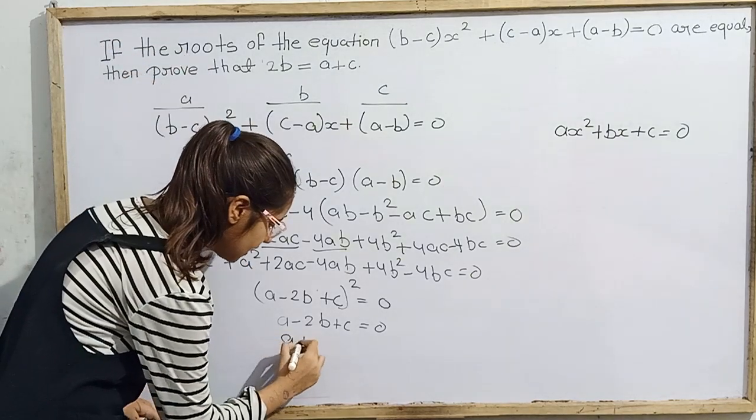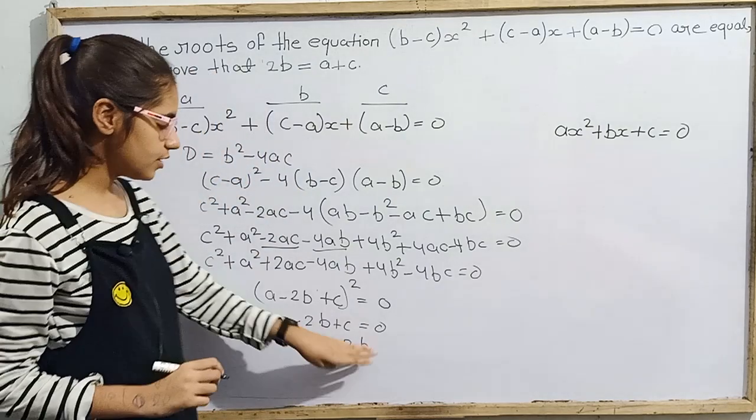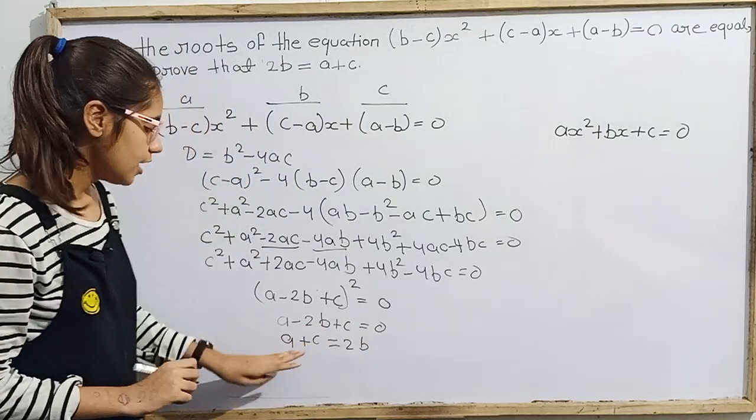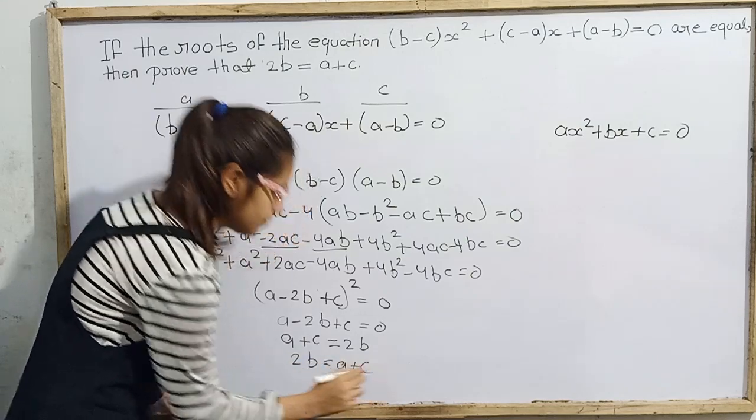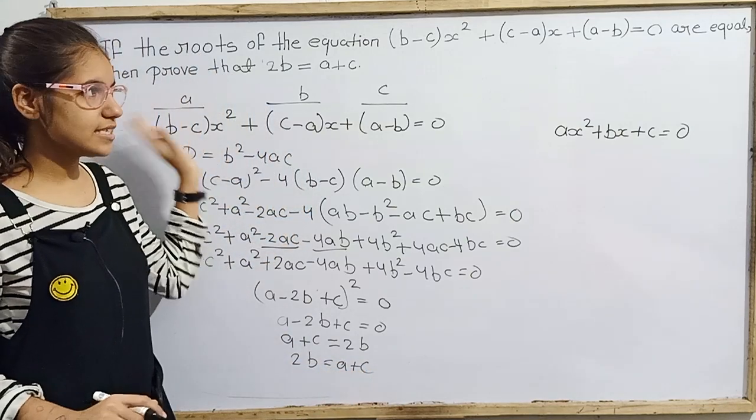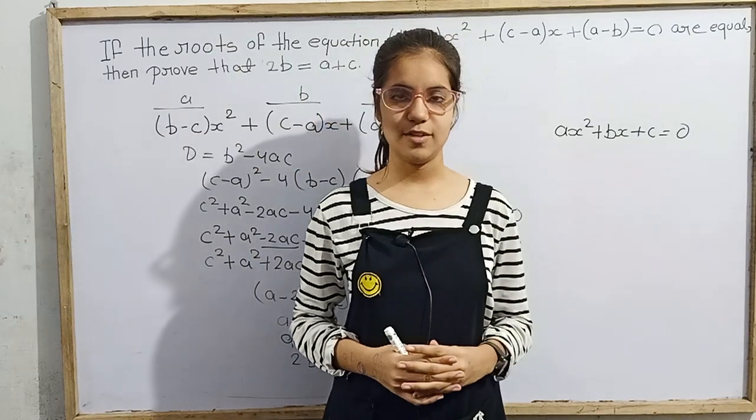Now a plus c equal 2b. Here it is negative. When it will transfer, it will be positive. Now what we got? Like this we can write 2b equal a plus c. Hence we have proved. Our question is successfully solved. And thanks for watching this video. Hope you enjoy this video. Thank you.